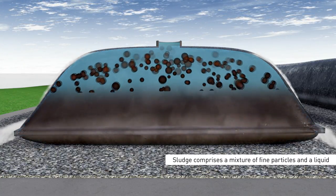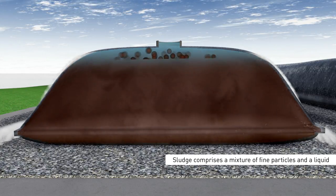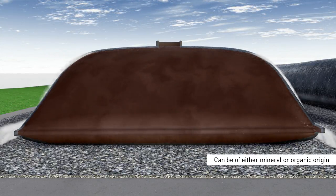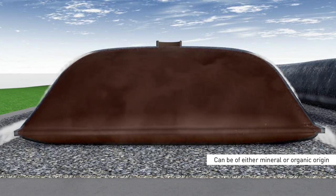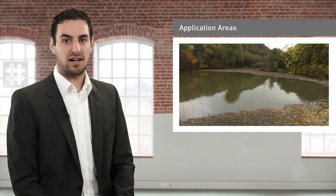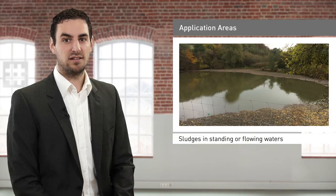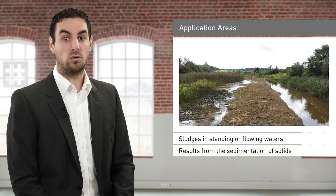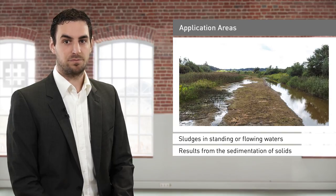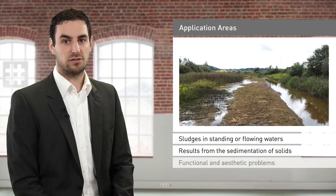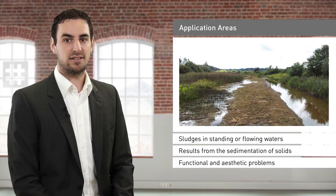Sludge comprises a mixture of fine particles and a liquid, the particles being finely distributed or suspended in the fluid. The suspended particles can be of either mineral or organic origin. Sludge accumulation in ponds, lakes, dam reservoirs and other standing or flowing waters results from the sedimentation of solids, which is triggered by a reduction in flow speed and the accordingly lower transport capacity of the water. The sludge, also referred to as sediment, can bring about considerable functional and aesthetic problems in water bodies, watercourses and hydraulic structures.